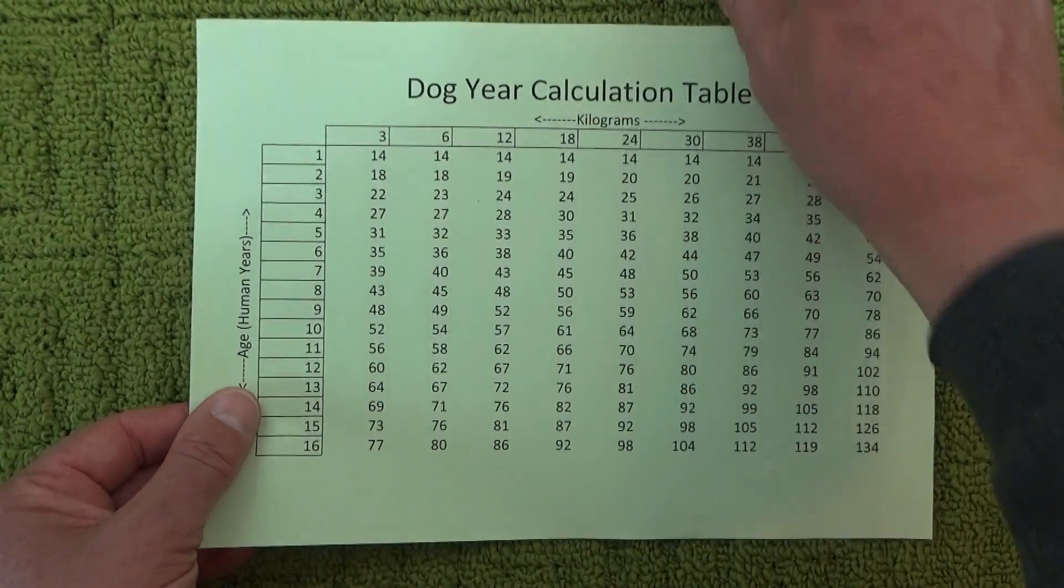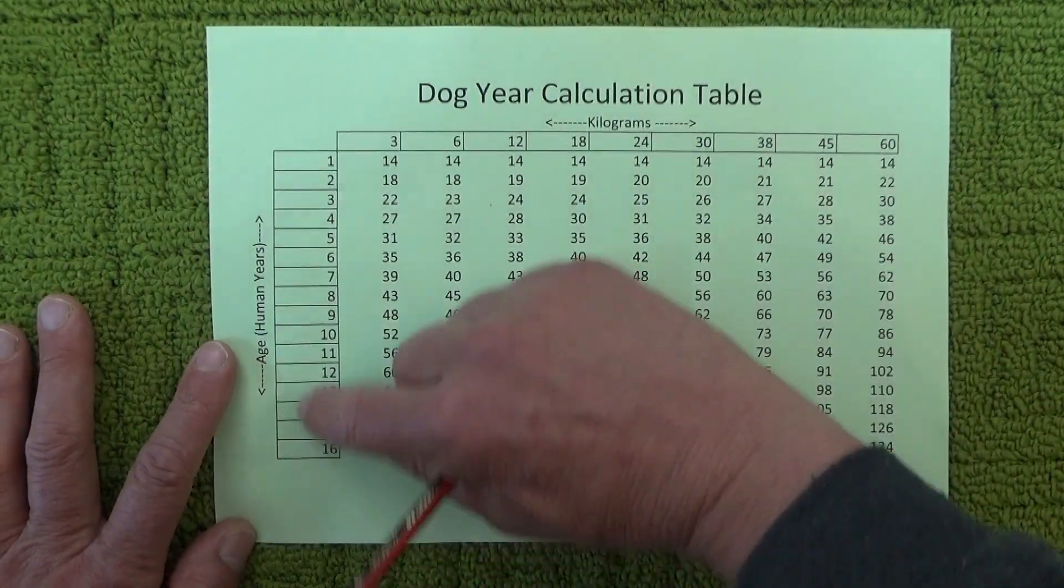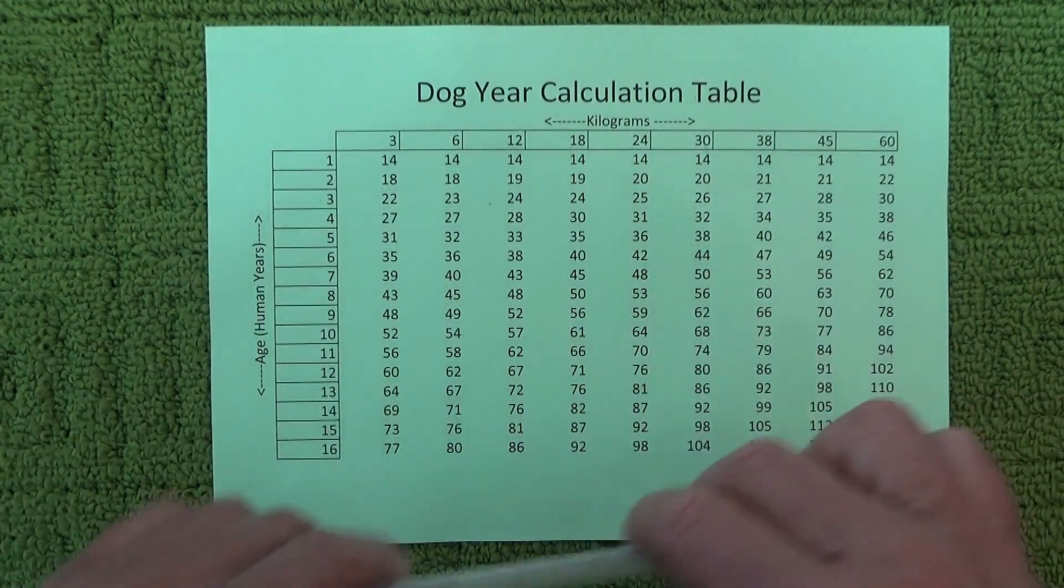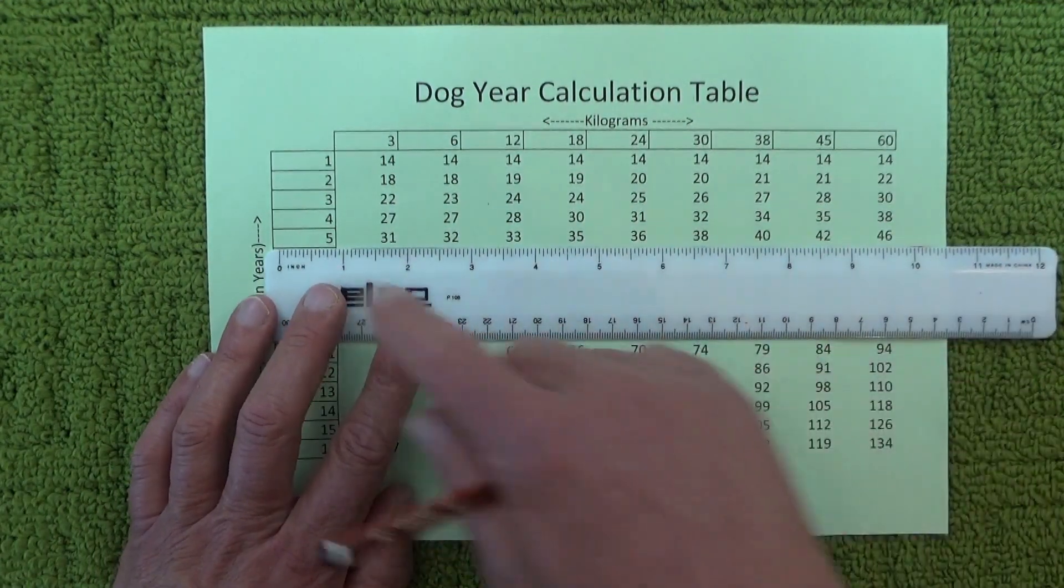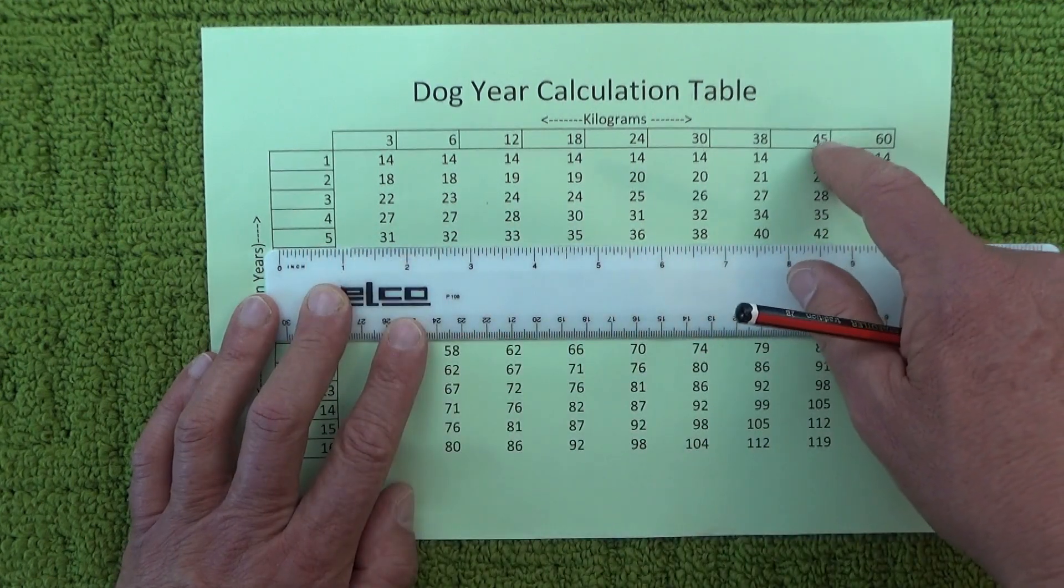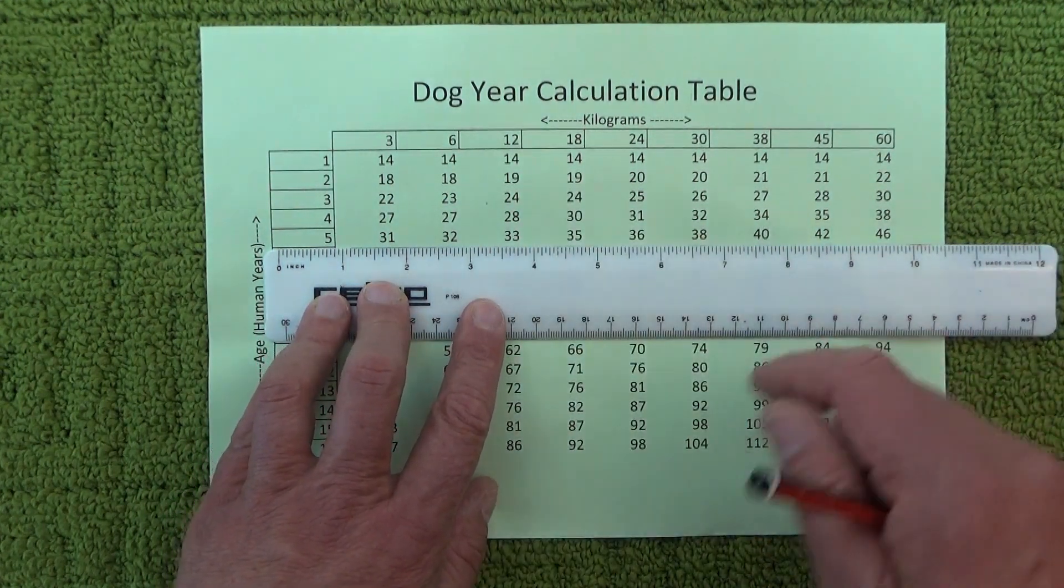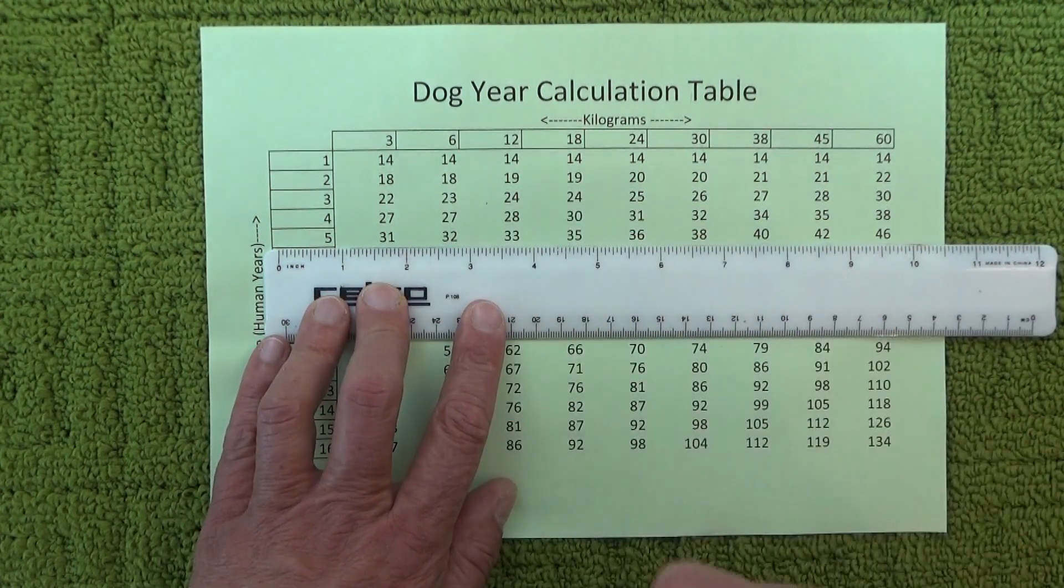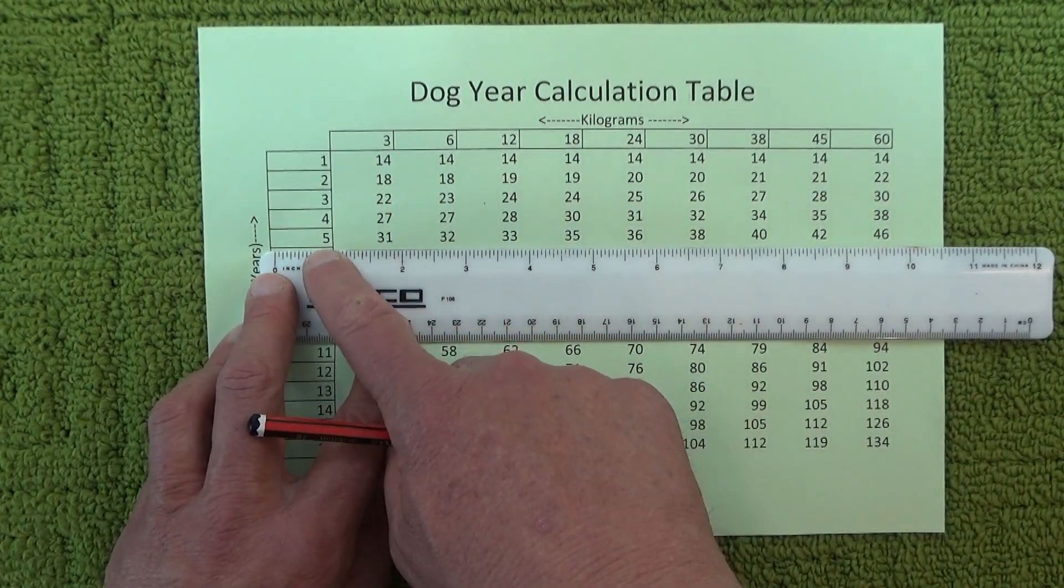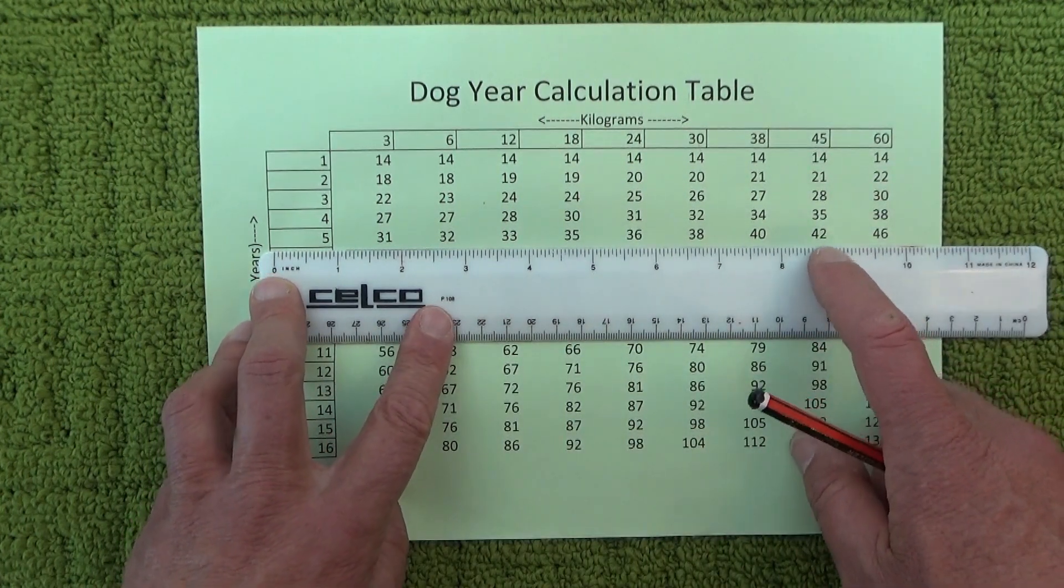I've put together this simple table, a dog year calculation table. I've got years listed up the side and kilos across the top. It's just a way of looking up a dog's age and the weight of the dog and working out their equivalent dog years. So, for instance, we've got a dog that's five years of age and weighs 45 kilos—that's the equivalent of 42 dog years.